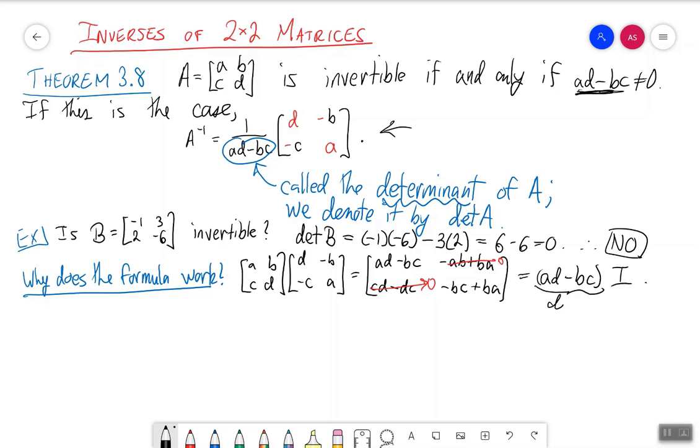Because this guy right here, this is the determinant of A, remember? So if the determinant of A is not zero, then we get ABCD times 1 over determinant of A times D minus B minus C, A.